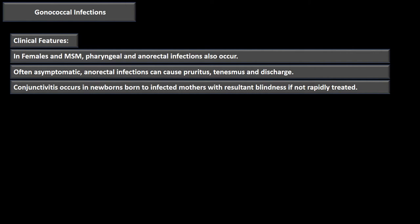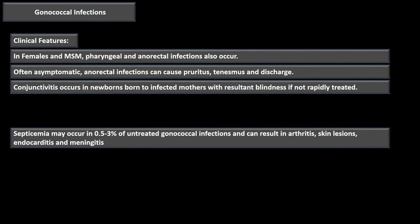We also have to worry about conjunctivitis — the gonococcal infection getting into the lining of the eye — in newborns born to infected mothers. If not treated, this can result in blindness, so rapid identification and treatment is critical. Very rarely, septicemia can occur: 0.5 to 3 percent of untreated gonococcal infections can spread to the joints causing arthritis, cause skin lesions, get into the heart causing endocarditis, or get into the lining of the spinal cord causing meningitis.